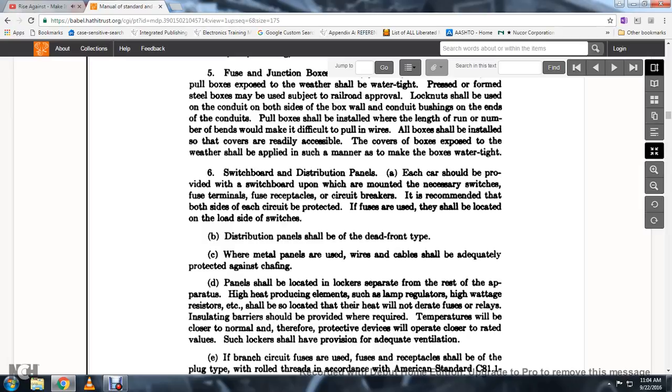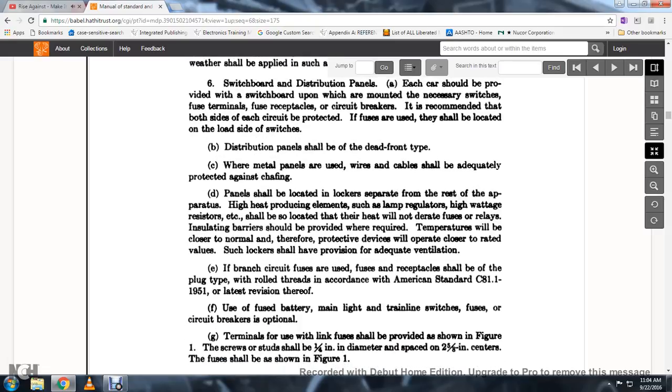Panels should be located in separate lockers from the rest of the apparatus. The heating producing elements, the load regulator, high wattage resistors, etc., shall be located where the heat will not deteriorate the fuse or relays. Insulating barriers should be provided where required so temperature will be closer to normal, thereby protecting devices to operate closer to rated values. Such lockers shall have provision for adequate ventilation.